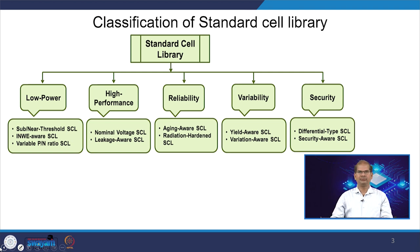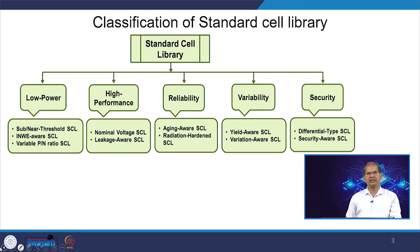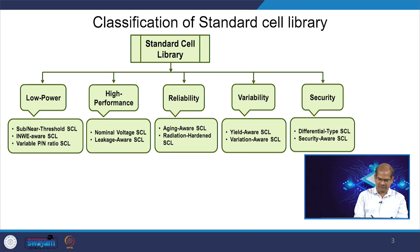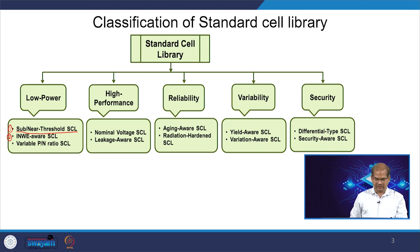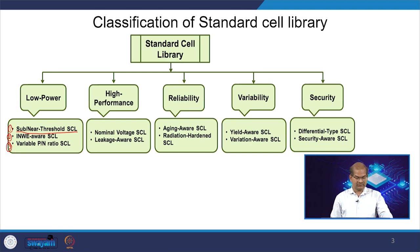First, let us classify the different types of standard cell libraries. If we have a smartphone where we are worried about power dissipation, we look for a library that is low power in nature — specifically a near threshold or soft threshold standard cell library. The second category is the INWIWARE standard cell library, and the third is the variable PN boundary based standard cell library.